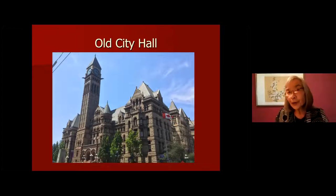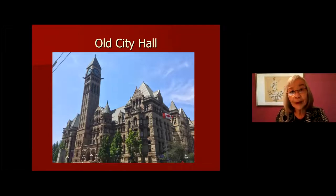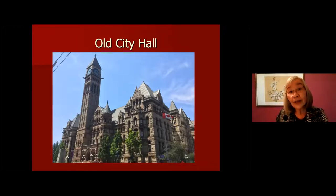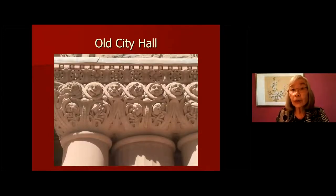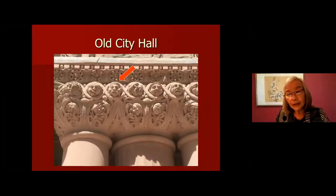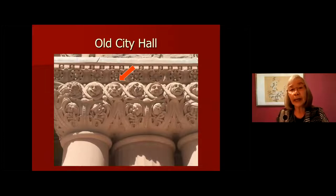If we were standing at Old City Hall, climbing up the beautiful steps at the main entrance, at the top of the pillars you'll see what we call grotesques. I want to point out one grotesque in particular — the face of a Chinese man. The architect of Old City Hall was Edward Lennox, and that building was completed in 1899. At the time, it was the largest municipal project being built in North America.